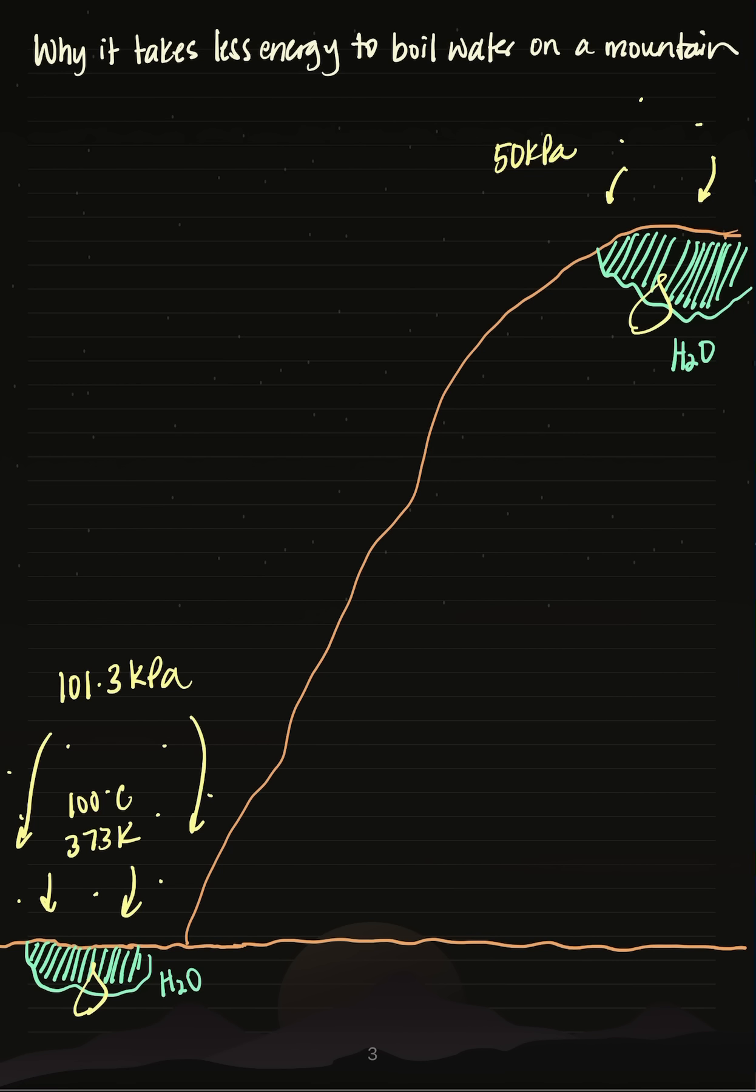So specifically at 50 kilopascals, the boiling point is 81 degrees celsius, which is equivalent to 354 kelvin. There is a formula if you're interested in learning about that in another video, but this is why water will boil at a lower temperature as we move up in altitude.